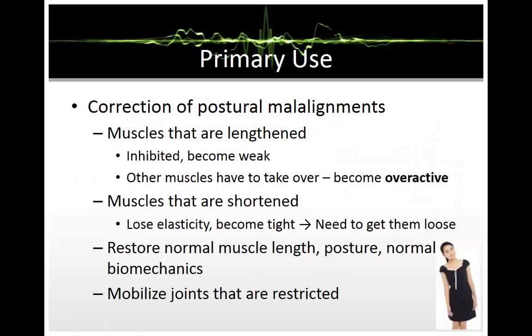The primary use for muscle energy is the correction of postural malalignments. Muscles that are overly lengthened are inhibited and become weak, causing other muscles to take over and become overactive. Muscles that are shortened lose elasticity and become tight. The goal of muscle energy is to restore normal muscle length, posture, normal biomechanics, and to mobilize joints that are restricted.